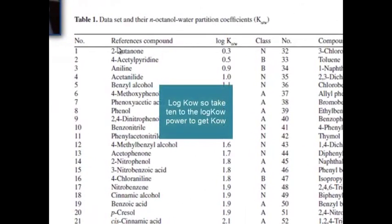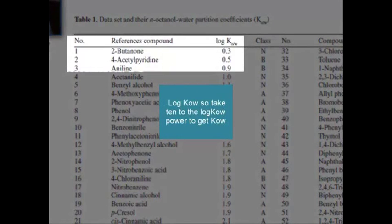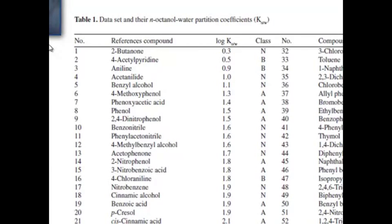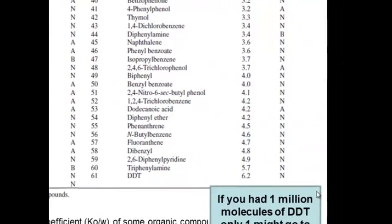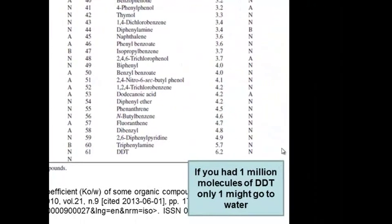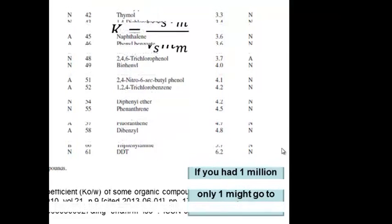So, if you look at this table, the material up here, butanone and aniline, these are relatively polar. Now, again, if you have a lot, lot more octanol, you would drive more moles into that. Okay, so if you go down to DDT, you see something very different. You would find that if you had one million molecules of DDT, only one might get into the water. And so, really, you see a huge range of partition coefficients, and they more or less reflect basic concepts of polarity. And there's some subtler issues in there, but for now, we're just going to be thinking of it as polar things go into polar solvents.